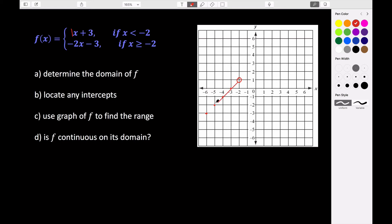So we can then just draw in our line. And this is our equation here. So this is f of x equals x plus 3. So that's the first part of our graph.